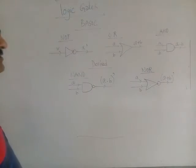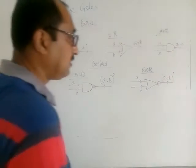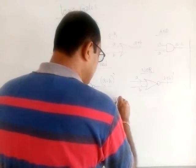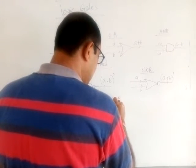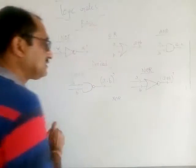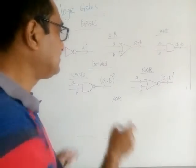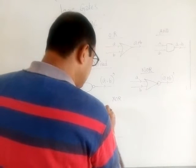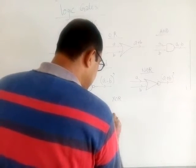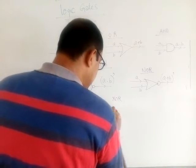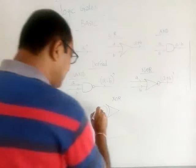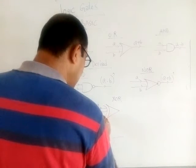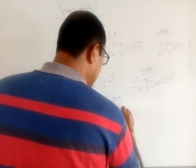There is another gate called the XOR gate — X-OR. The XOR gate is a very different kind of gate. If you pass two currents A and B, it produces a specific output different from the basic gates.